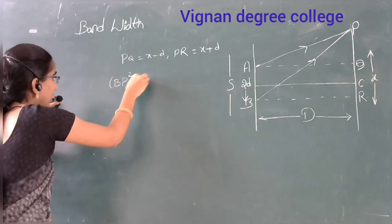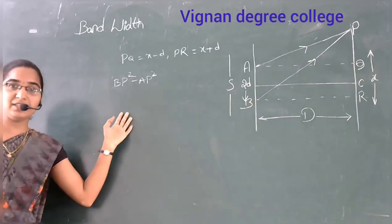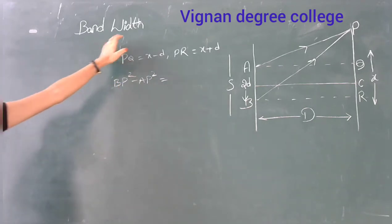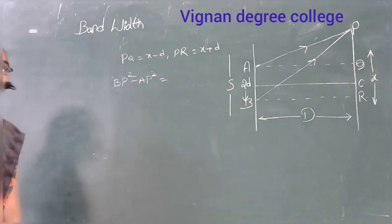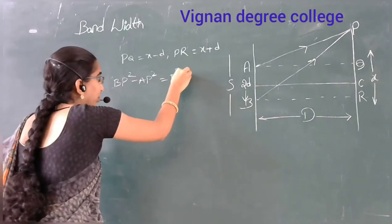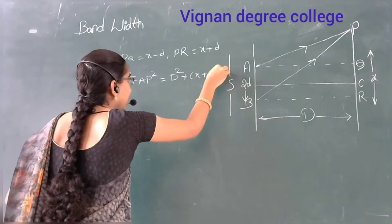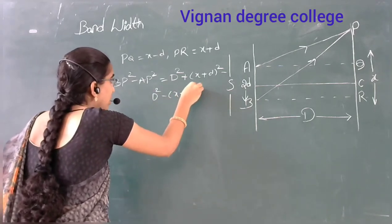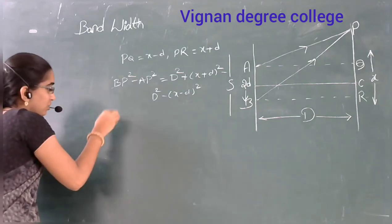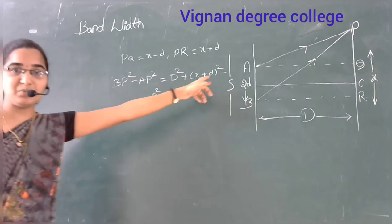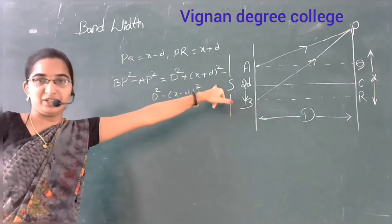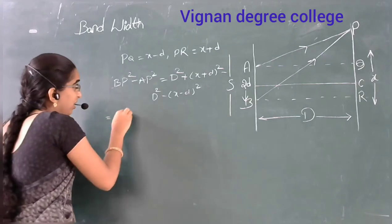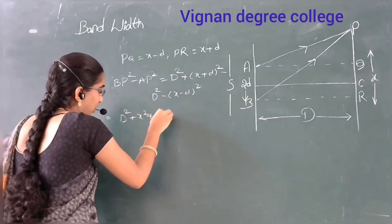BP squared minus AP squared. BP squared equals PC squared, which gives us: d squared plus (x plus d) squared minus d squared minus (x minus d) whole squared. Applying the algebraic identity (a plus b) whole squared equals a squared plus b squared plus 2ab, we expand: d squared plus x squared plus d squared plus 2xd.